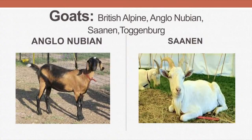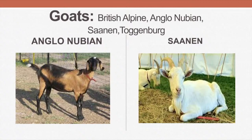Continuing by looking at breeds — we have the goat breeds: the British Alpine, the Anglo-Nubian, the Saanen, and the Toggenburg. You are looking at the Anglo-Nubian. If you look at these breeds, you are seeing how the ears are floppy and how the animal is standing straight. And you are looking at the Saanen right here. You are able to identify the breeds most of the time based on the color of the animal.